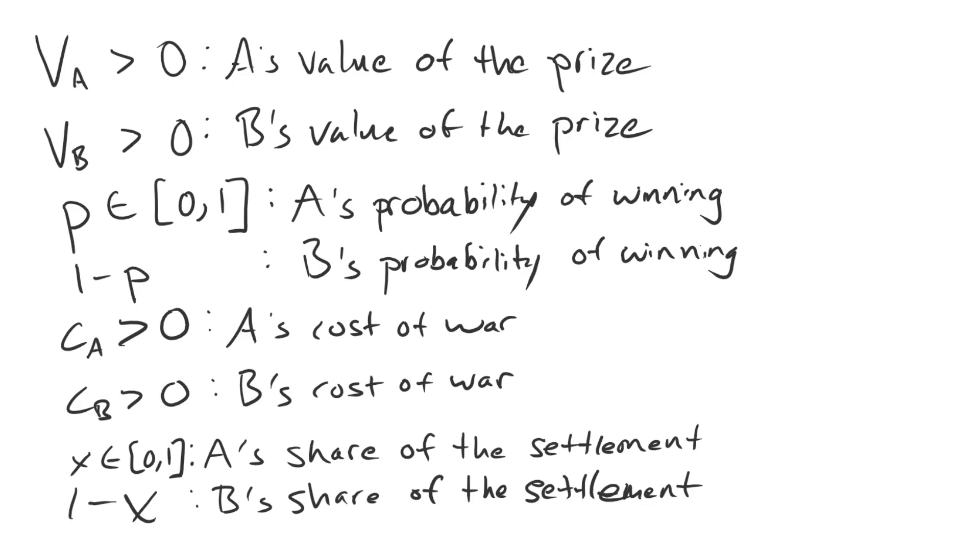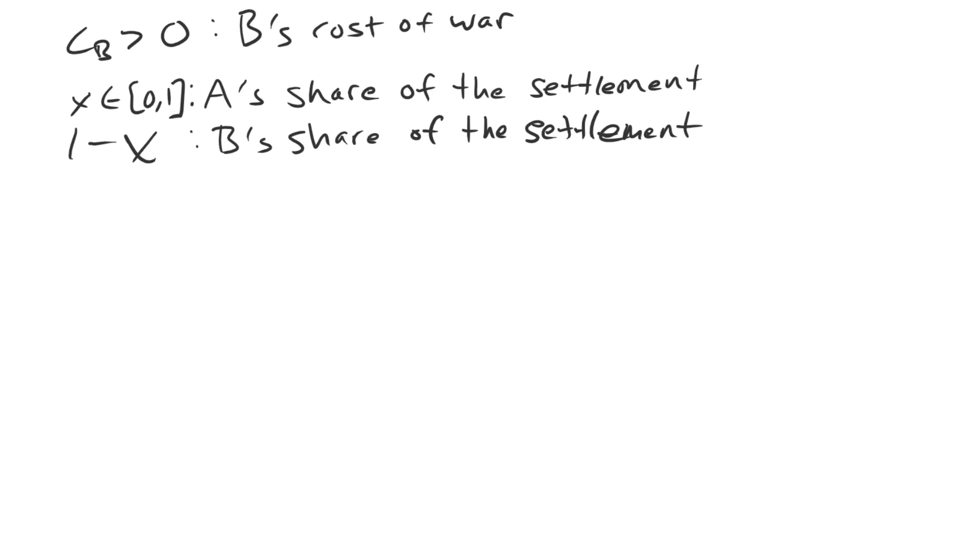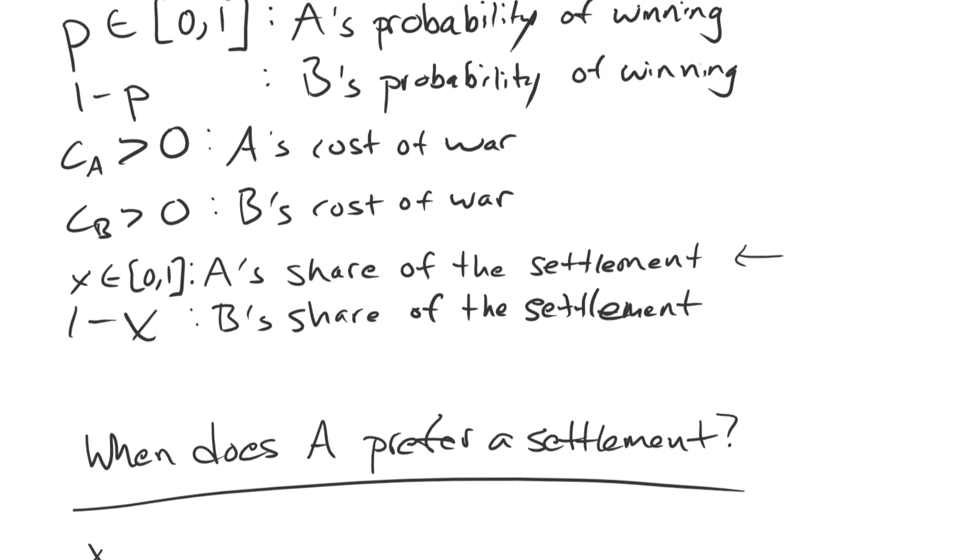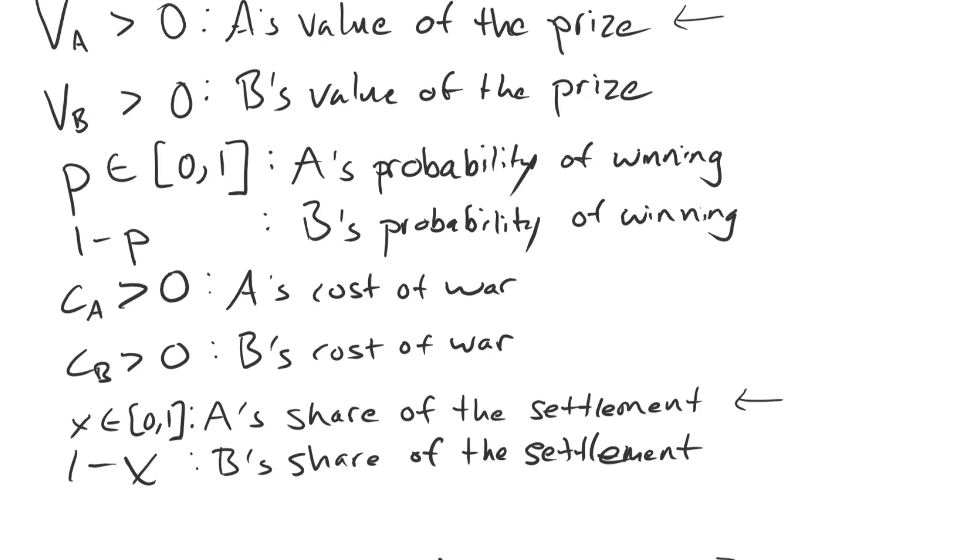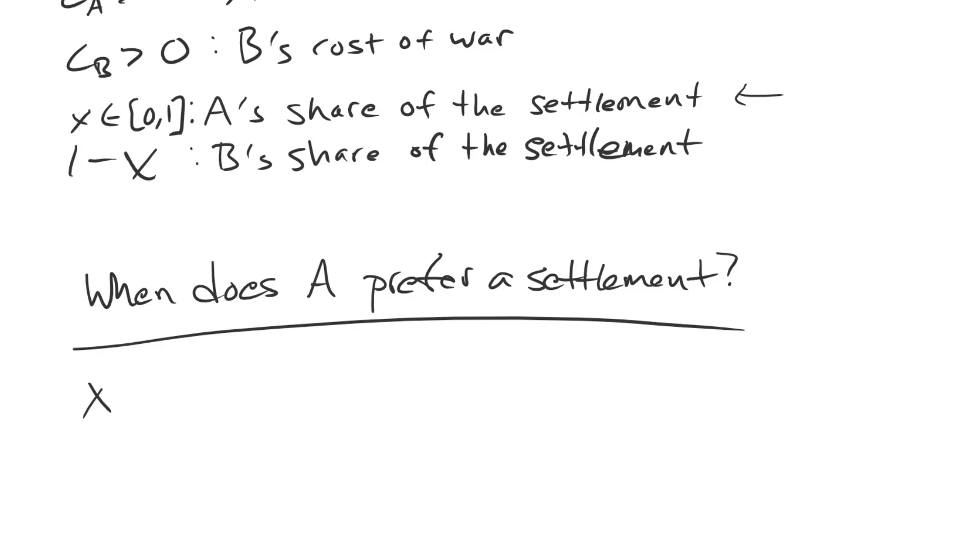Now that we have all of the notation down on the board, let's think about the value for accepting a settlement versus the value for fighting a war. Let's start with A. When does A prefer a settlement? Well, A's share of a settlement is X. That's a percentage share of the good, so if it's receiving X in a settlement, we're multiplying that by A's value of the prize, which is VA. So it's getting X percentage of the total value VA.